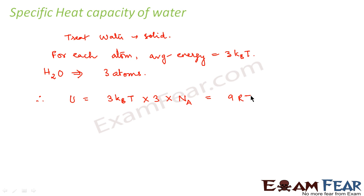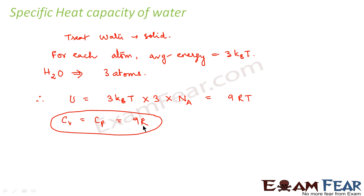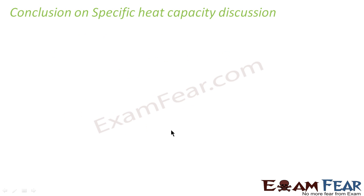So this would be 9RT. Therefore, Cv is equal to Cp, which will be equal to 9R. This value 9R also agrees approximately with the experimental value. So I hope that after seeing this, it is clear how we calculate specific heat capacity depending on the number of degrees of freedom.